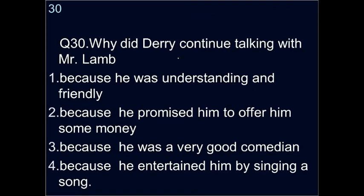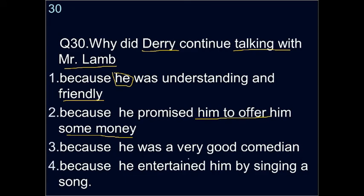Question thirty: why did Derry continue talking with Mr. Lamb? Derry initially didn't want to talk, but kept talking. Options are: because Lamb was understanding and friendly, because he promised money, because he was a good comedian, or because he sang a song. The correct answer is the first option — Mr. Lamb was understanding, empathetic, and friendly.